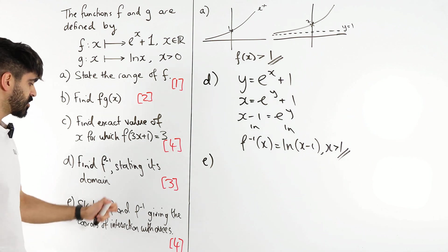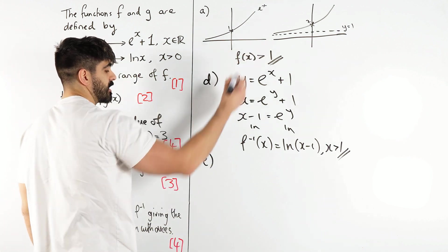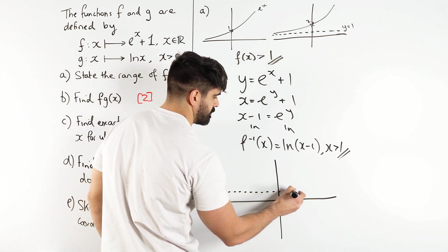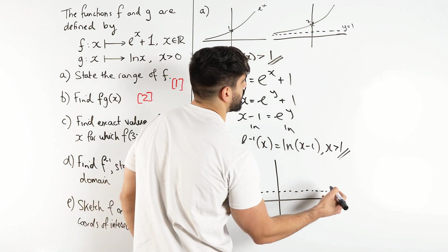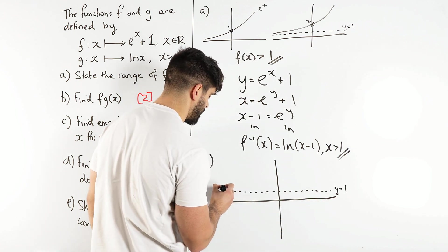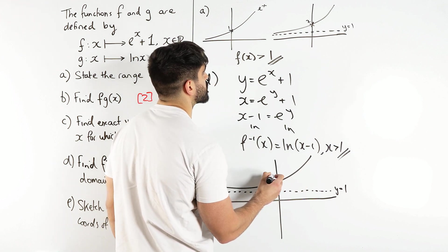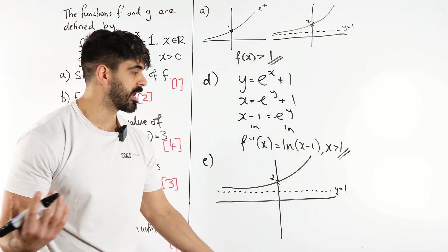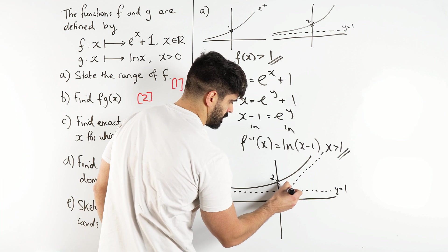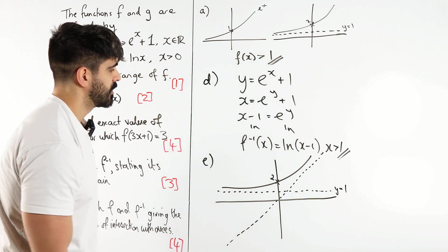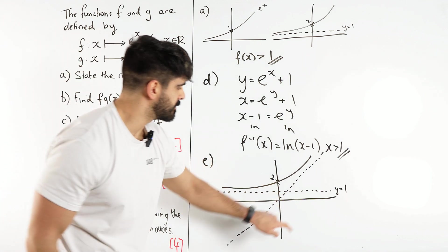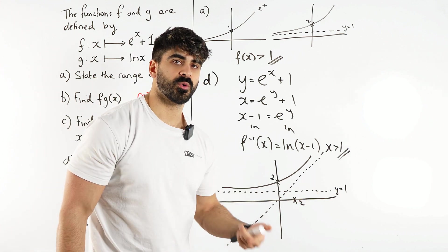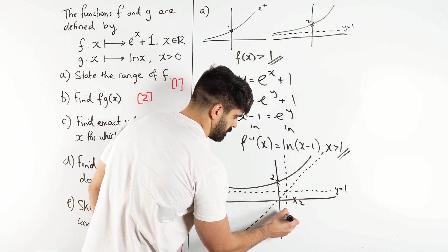Okay, part E. Sketch f and its inverse, stating the coordinates of intersection with the axes. Now we've already done part of this. I'm going to include the asymptote, even though they haven't asked for it. So my graph looks like this. Now when you do inverse, when we're swapping the x and the y, we're letting f equal x. So it's a reflection in the y = x graph like this. So if this is y = 2, when we reflect it, it becomes x = 2. y = 1 was the asymptote, so when we make y = x, the asymptote will be x = 1.